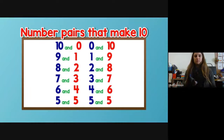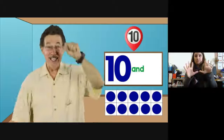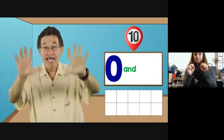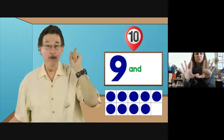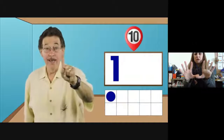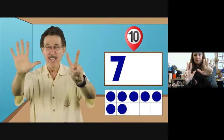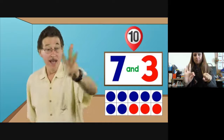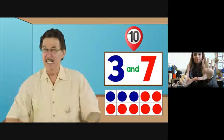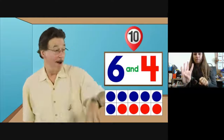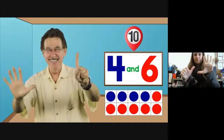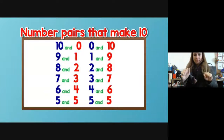A little faster: ten and zero, zero and ten, nine and one, one and nine, eight and two, two and eight, seven and three, three and seven, six and four, four and six, five and five, five and five. Those are the number pairs that make ten.